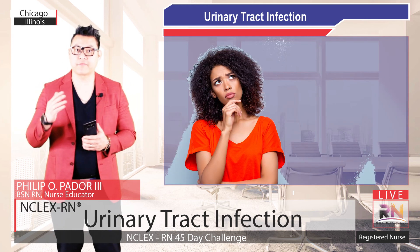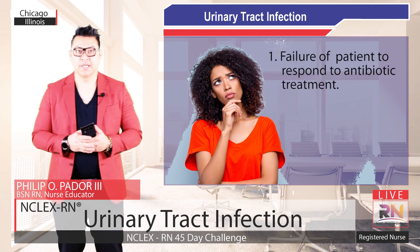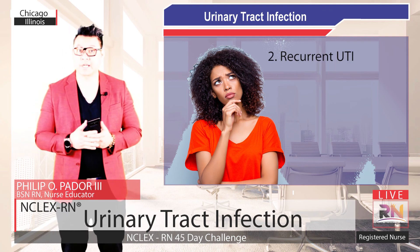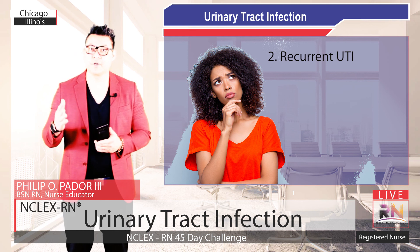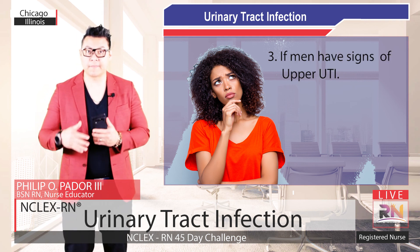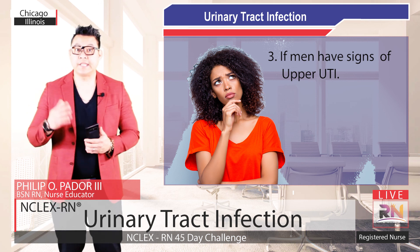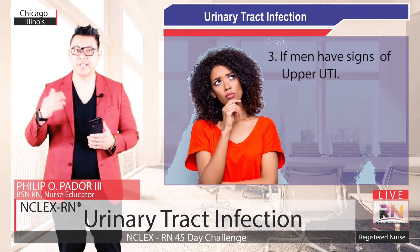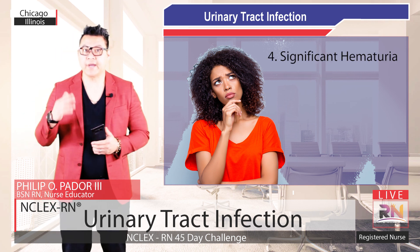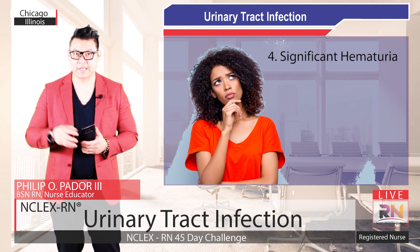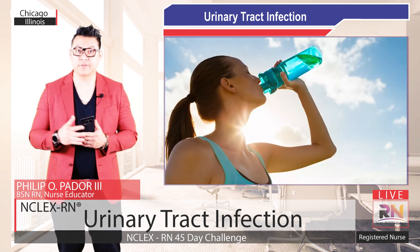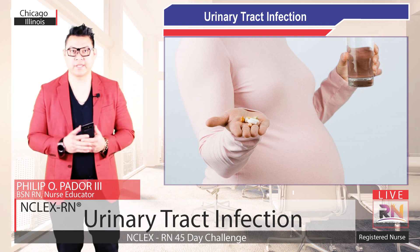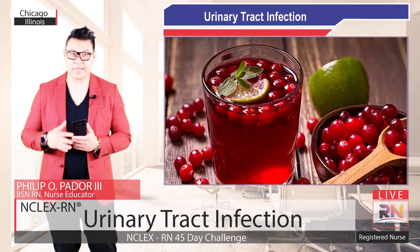It is important to know when to refer to a renal specialist or urologist. Refer to a urologist if the patient fails to respond to antibiotic treatment, if there is recurrent UTI — defined as three or more in one year — or if men have symptoms of upper urinary tract infection, as it is very uncommon for men to develop upper UTI and could indicate a more sinister anatomical abnormality. Also refer if there is significant hematuria. Preventive measures for UTI include drinking more water, antibiotic prophylaxis especially for females with recurrent UTI, and cranberry juice, although there are arguments for and against this. Thank you very much for joining us.